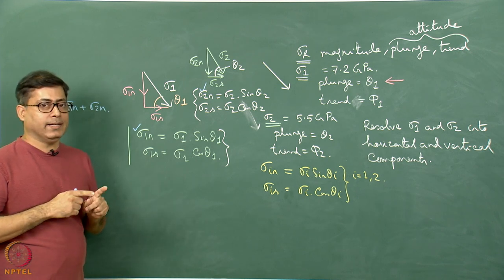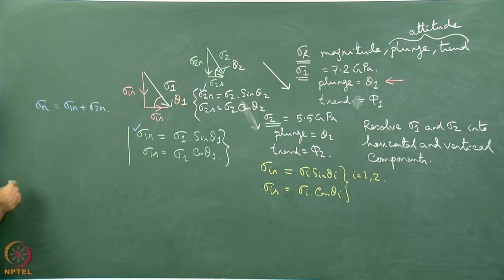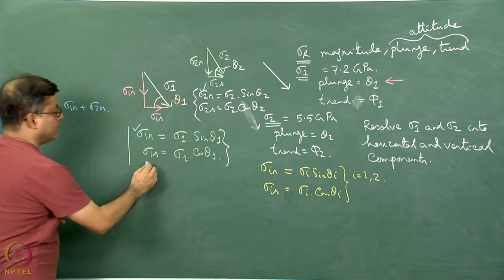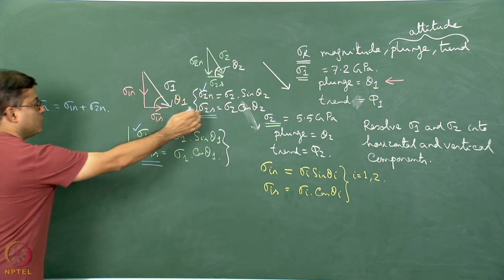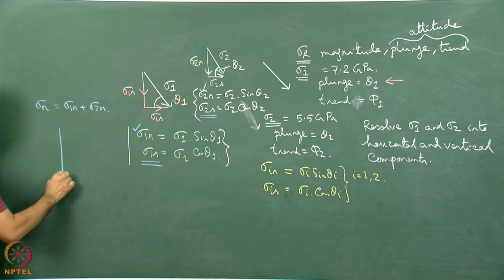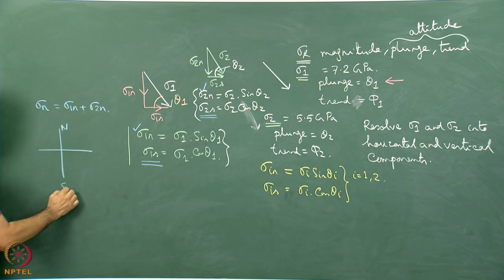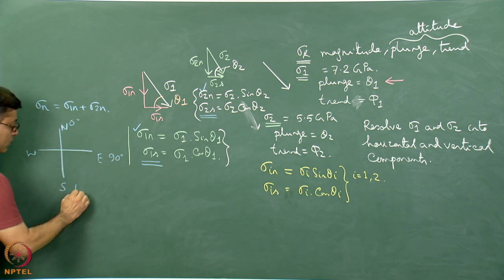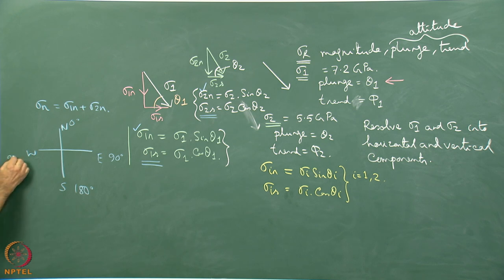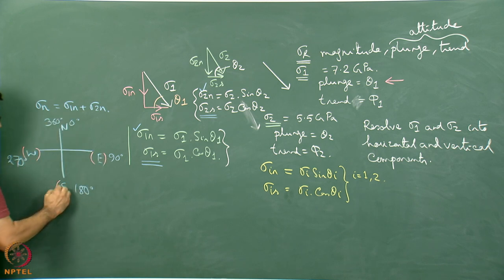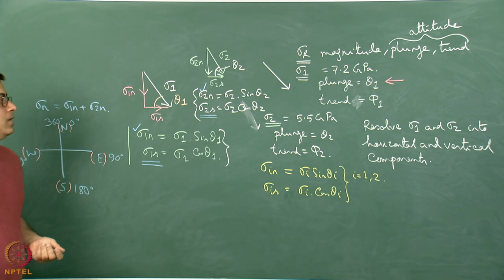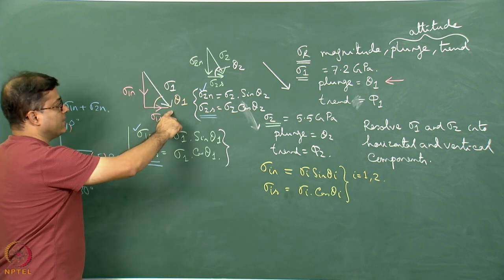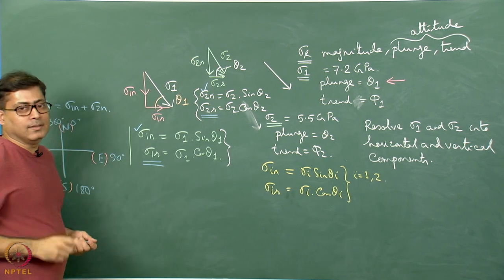There are situations when they will not be added but subtracted, which I will show later. Now for sigma 1s and sigma 2s — the shear components — these two can be drawn on a horizontal plane with north-south and east-west directions. North is 0°, east is 90°, south is 180°, west is 270°, and north again is 360°. I draw sigma 1s and sigma 2s on this horizontal plane.